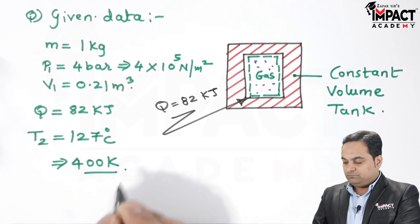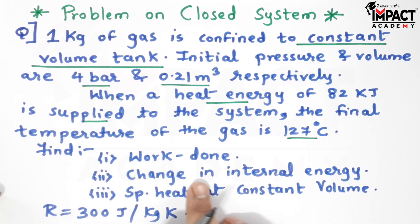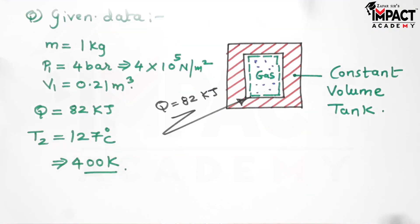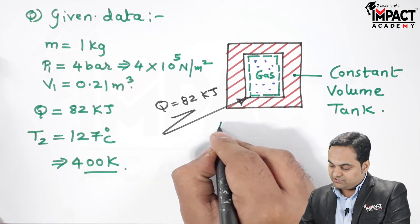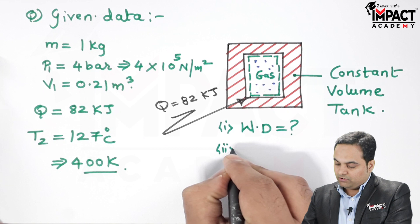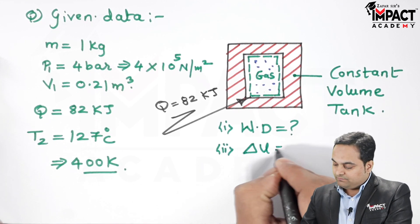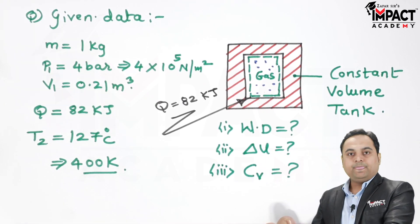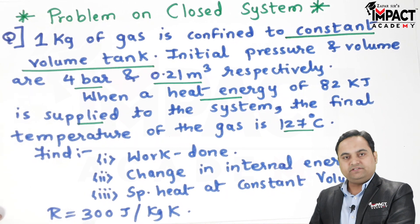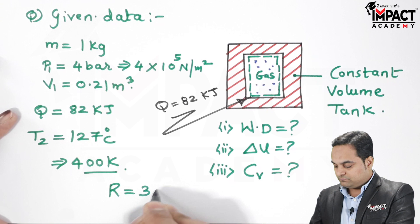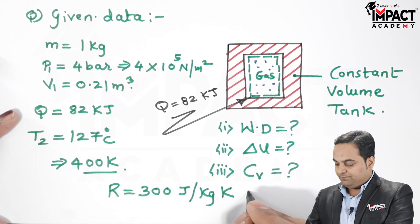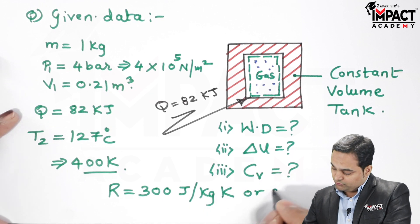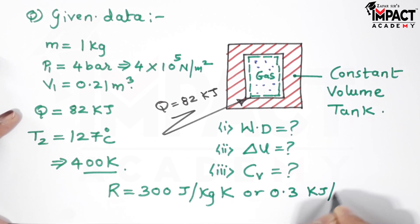We have to find: work done, change in internal energy, and specific heat at constant volume Cv. Also given is the characteristic gas constant R = 300 joule per kg Kelvin, which is 0.3 kilojoule per kg Kelvin. This value may be required in the problem.